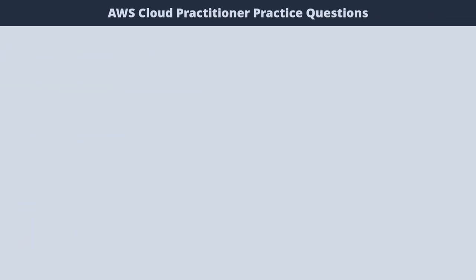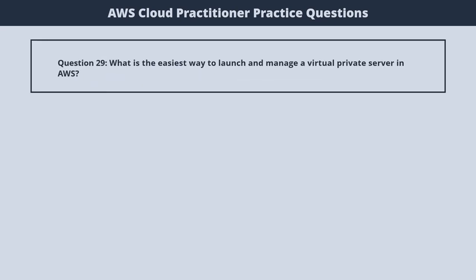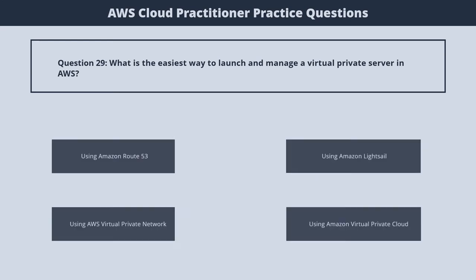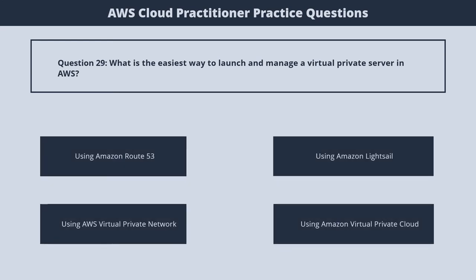Question 29. What is the easiest way to launch and manage a virtual private server in AWS? 1. Using Amazon Route 53. 2. Using Amazon Lightsail. 3. Using AWS Virtual Private Network. 4. Using Amazon Virtual Private Cloud. The correct answer is 2. Using Amazon Lightsail.